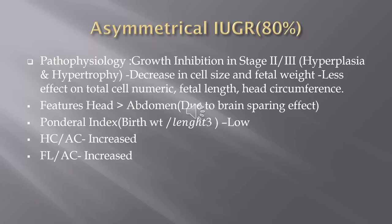Asymmetric IUGR — the more prevalent 80 percent type. Growth inhibition occurs in Stage 2 or 3, the late stages, with decrease in cell size, length, and fetal weight, but less effect on total cell number and head circumference. Features include increased head-to-abdomen ratio due to brain-sparing effect. The pondral index is low; head circumference to abdominal circumference ratio is increased; femur length to abdominal circumference ratio is increased; and the length-to-weight ratio is also increased.